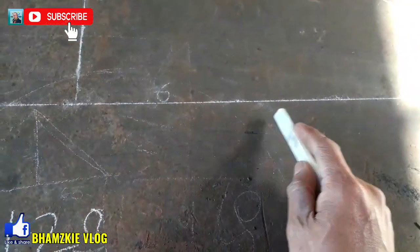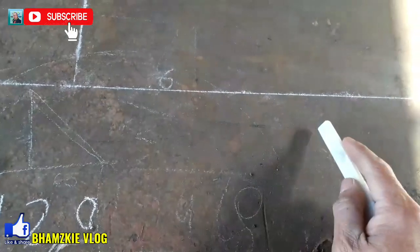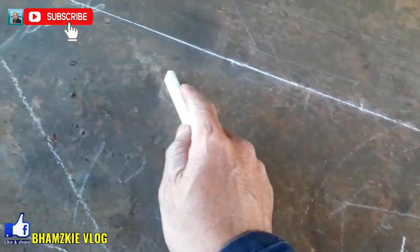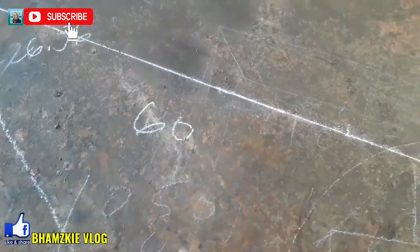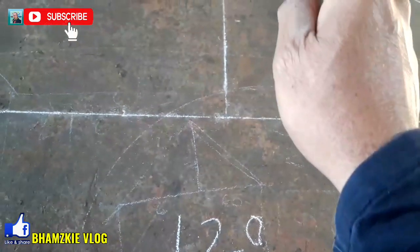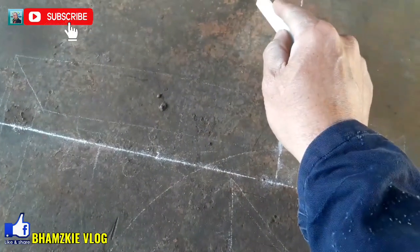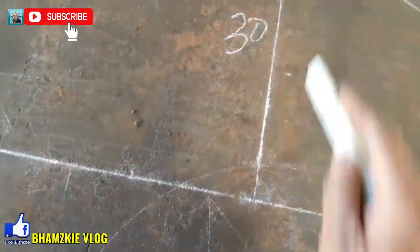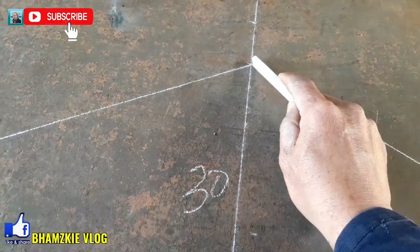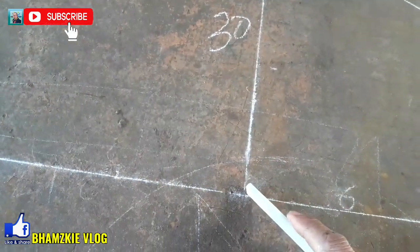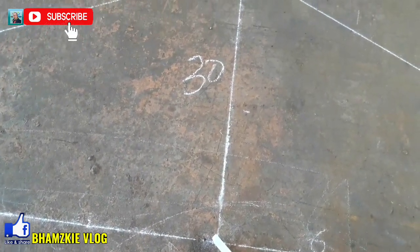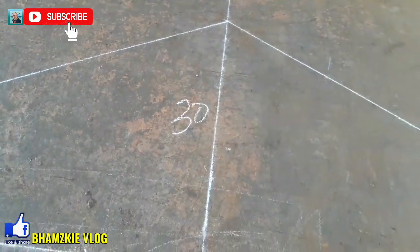Yung magiging total run nya is 60 cm — 60 cm dito, 60 din dito sa kabila. Dito naman sa ating rise is 30 cm — simula rito hanggang dito sa kanyang baba, dito sa beam nya sa baba. Yan yung ating 30 cm.